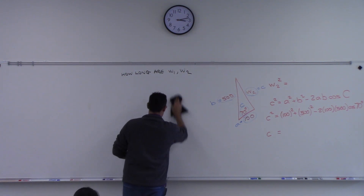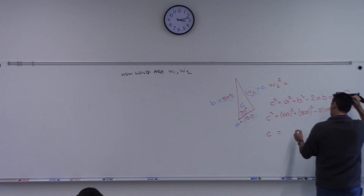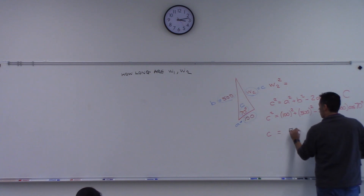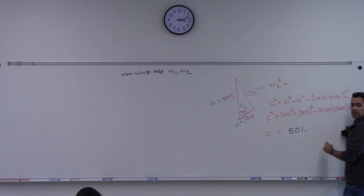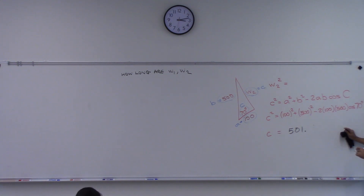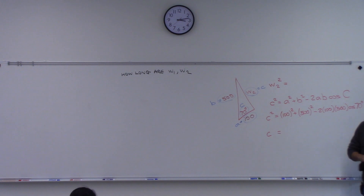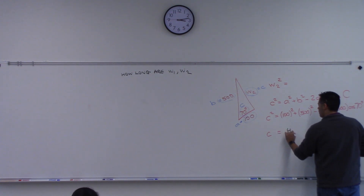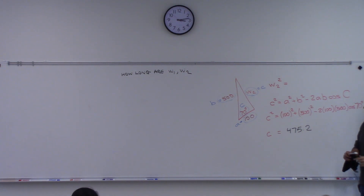Anyone get it yet? 501? I got 475.1. We're getting conflicting answers. Let's take a vote — 475.2? How many of you got 475.2? That's a majority. If you didn't get that, try it again.